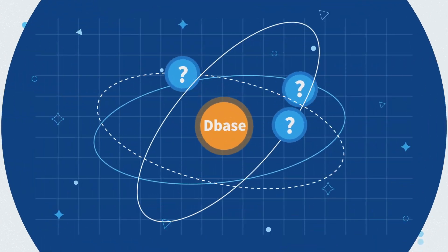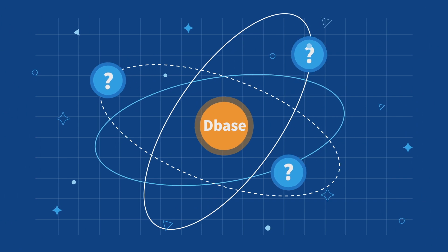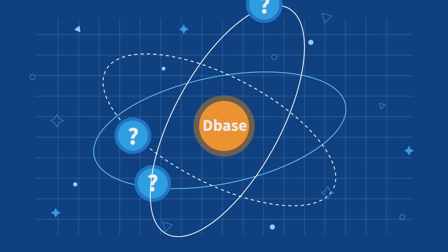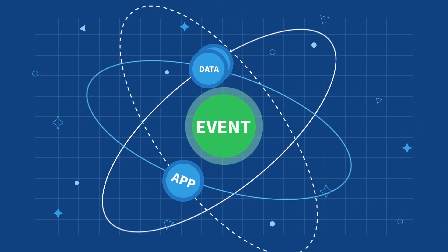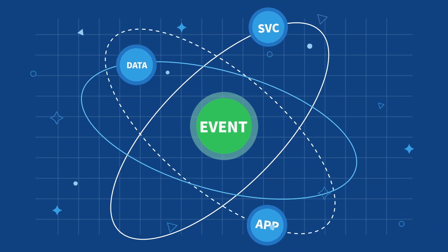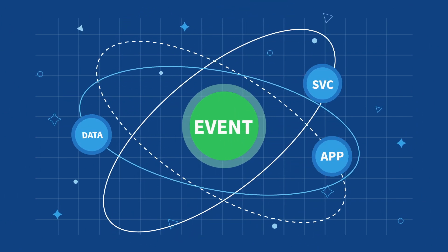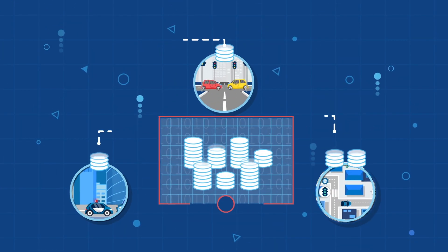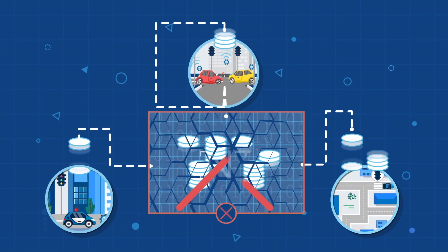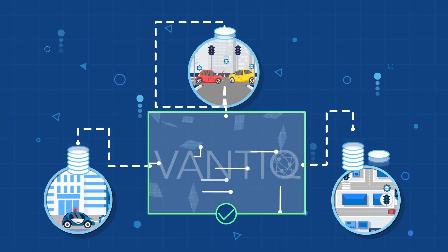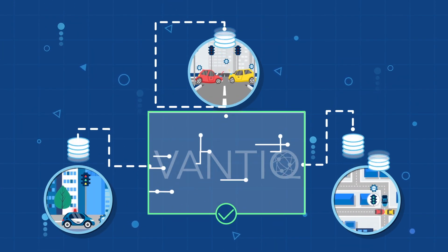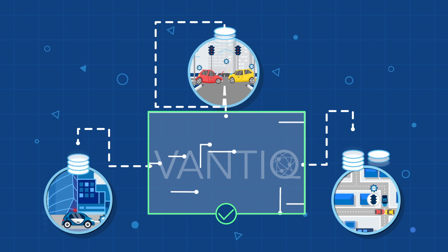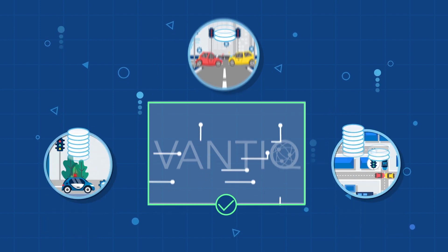While this would be a challenge for database-centric architectures, Bantic's event-driven architecture is much more flexible and scalable. Instead of storing the data, Bantic processes, transforms, and distributes important events as they occur.